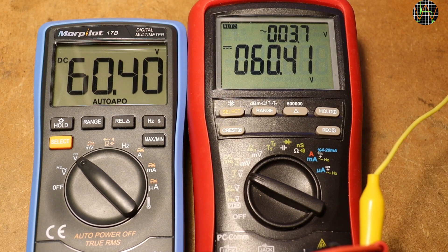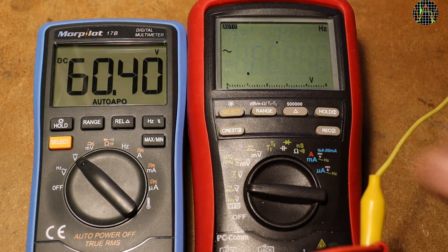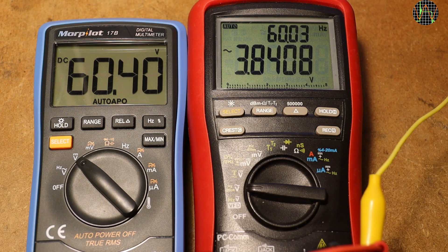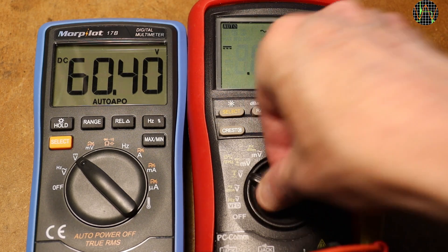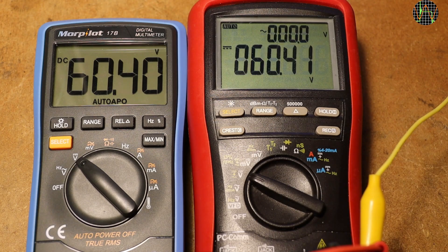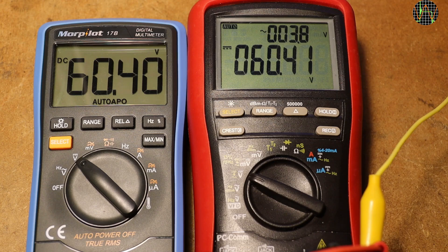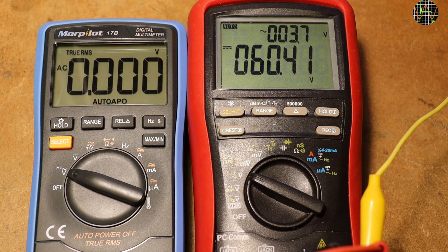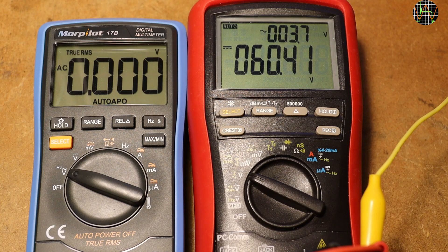But it is not all gold. A second more realistic scenario is to measure ripple AC on top of a large DC. Here I have a setup, a case of 60V DC with about 3.8V RMS ripple on top. The Morpilot has no problem showing the DC part but it has the same problem as the Grenova in that switching to AC shows 0 instead of the ripple.